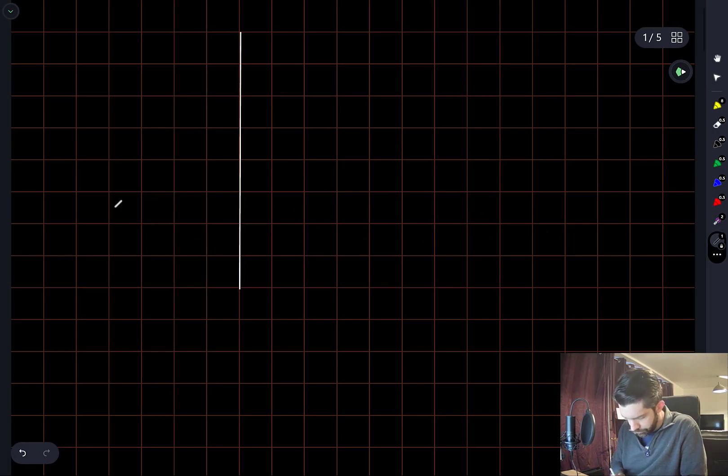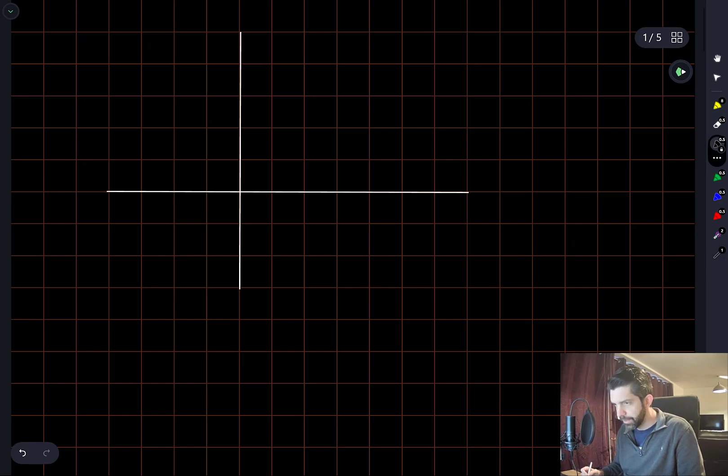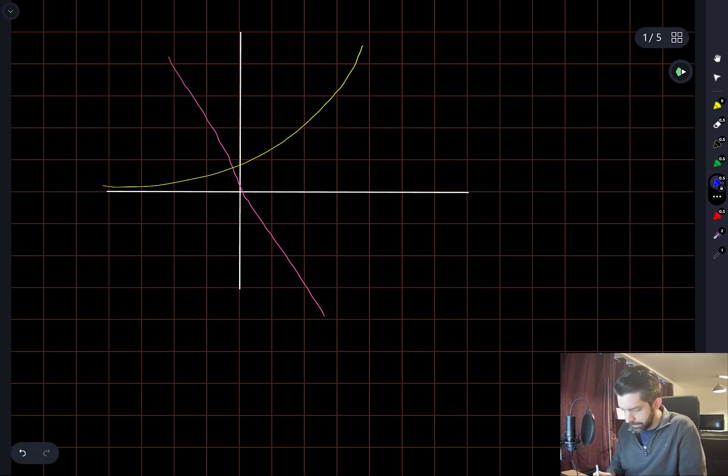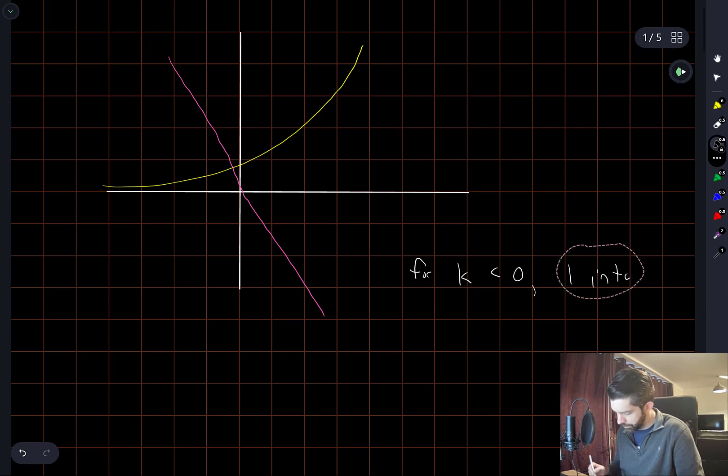So first let's draw a figure of what's going on. I'm going to handle the first case where k is negative. If k is negative then the slope looks something like that, and the exponential is always going to look something like that. These clearly always have only one point of intersection. So for k less than zero, one solution.